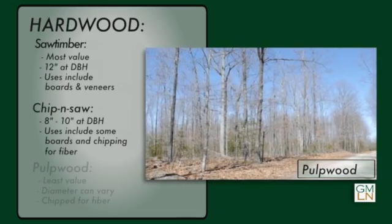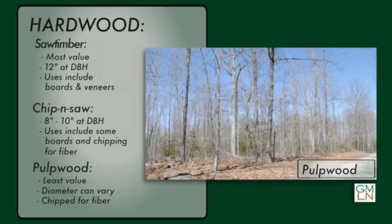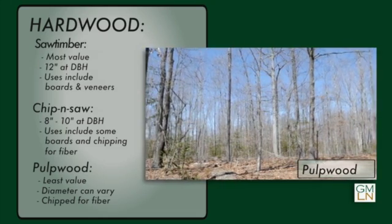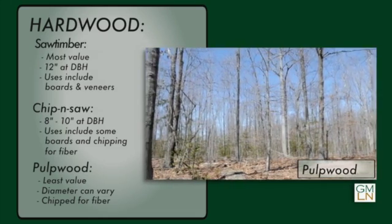On the hardwood pulpwood side of things, the diameter can vary and it's based on the quality of the hardwoods. Lesser quality hardwoods could go up to 12 inches if they're spirally or knotty, and they'll chip that up for fiber.